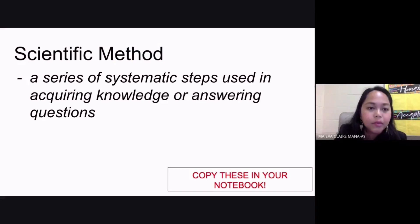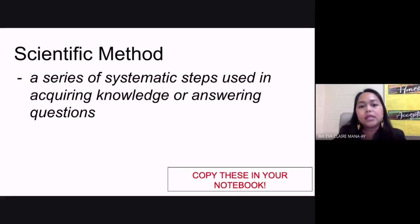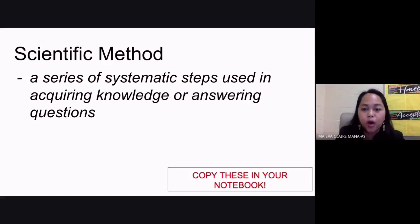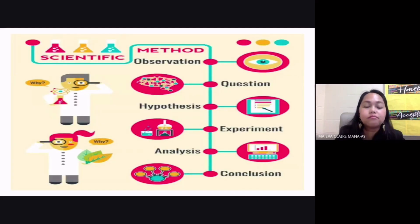When you say scientific method, this is just a series of systematic steps used in acquiring knowledge or in answering questions about the environment. Now this picture here summarizes all the steps in our scientific method.